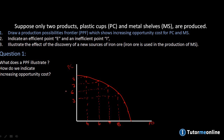So if we want to go from six to seven plastic cups on the vertical axis, how many metal shelves do we have to give up? Going from six plastic cups with seven metal shelves to seven plastic cups with six metal shelves, we need to give up one metal shelf to obtain one extra plastic cup. But if we want to go from seven to eight plastic cups, we need to go from six metal shelves to four, so we give up two metal shelves. That is our increasing opportunity cost — for the first extra unit we give up one metal shelf, but for the next unit we give up two.